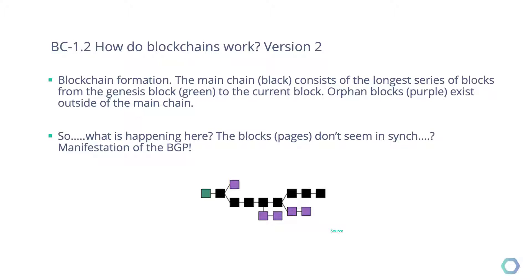Well, it most likely is, otherwise the miner wouldn't have presented it to the world — because they already know that if it's not valid, the other nodes won't accept it. So let's assume both blocks are valid and both are presented at the same time. If we skip back to the previous example, let's say that South America mined the block simultaneously with Africa.